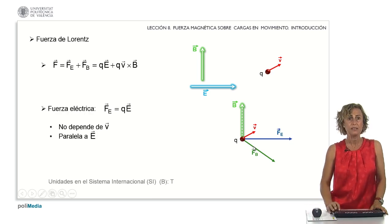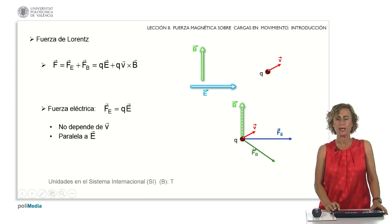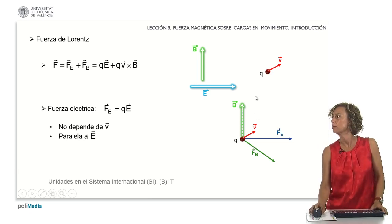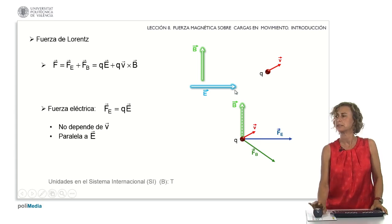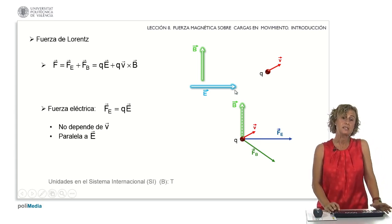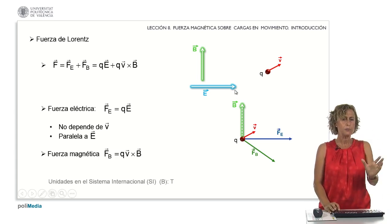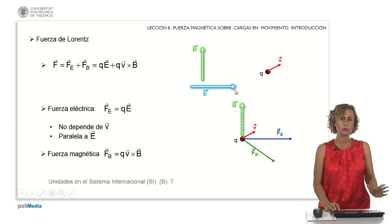The electric force, as discussed in the preceding section, was independent of v and was parallel to the electrostatic field. In this class, our focus will center on the implications of the magnetic force — we're going to focus on this part.